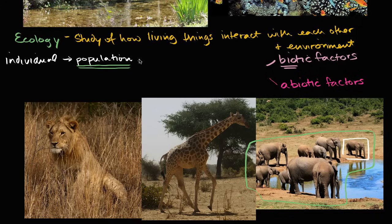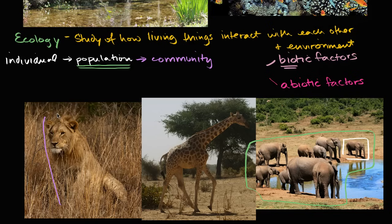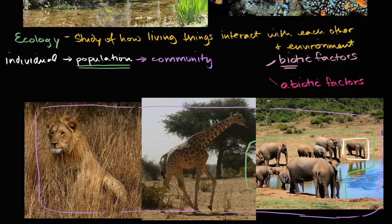The next level up is the community, which is all the living things that might live in that area, however we define it. So if this lion and this giraffe live in the area we used to define the population, they would be members of the community. And it wouldn't just be the big animals — it would include all the life in that area: the vegetation, the bacteria, the fungus, and any animals living inside the water of that watering hole.